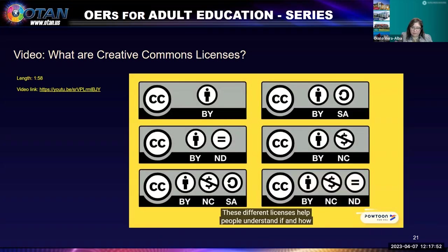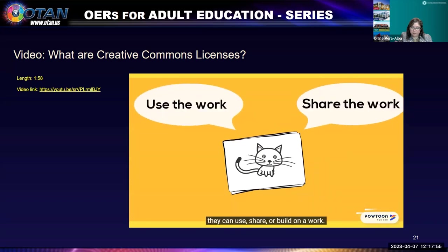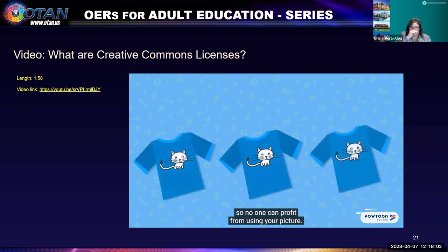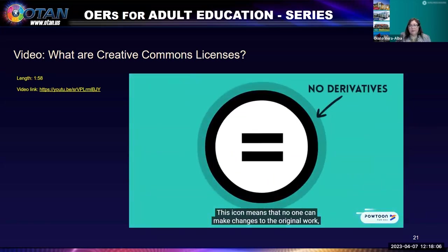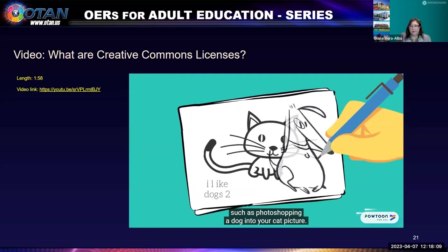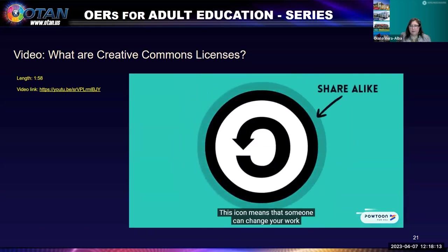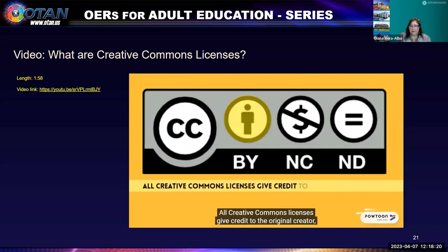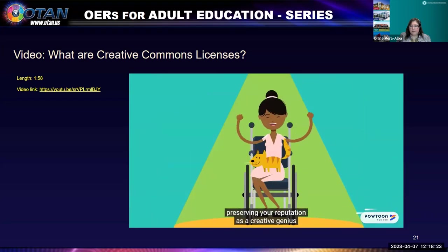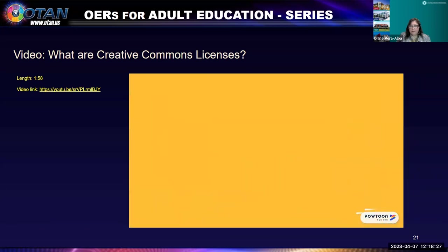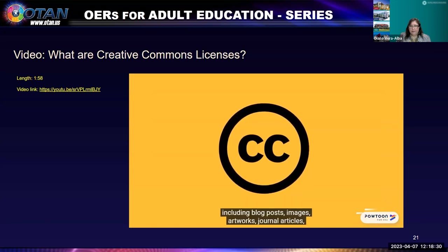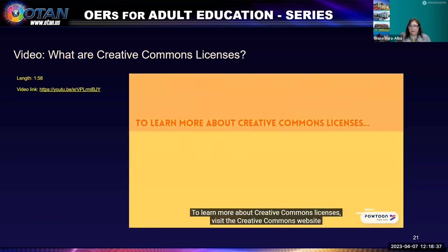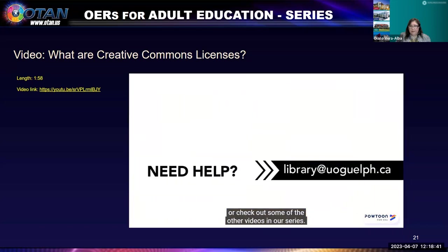These different licenses help people understand if and how they can use, share, or build on a work. One icon means only non-commercial uses are permitted. Another means no one can make changes to the original work. Another means someone can change your work but their version must be shared under the same license. All Creative Commons licenses give credit to the original creator. Licenses can be attached to most things, including blog posts, images, artworks, and journal articles.